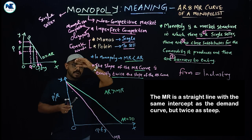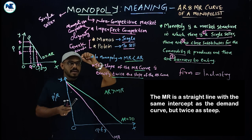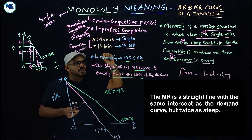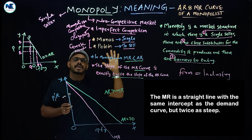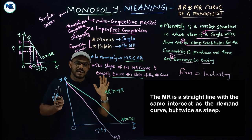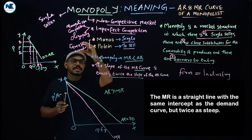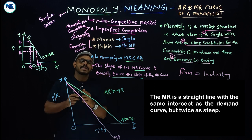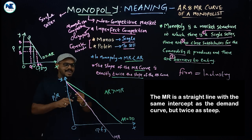In perfect competition, marginal revenue is equal to average revenue, which is equal to demand, which is equal to price. But here we are discussing monopoly, which is different from perfect competition.